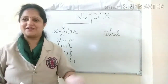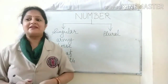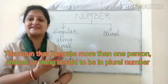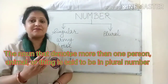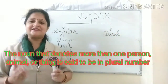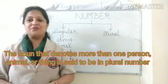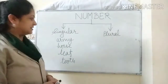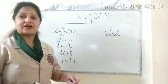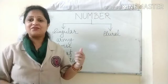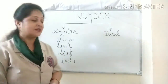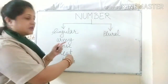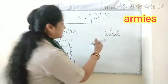So what is Plural Number? The noun that denotes more than one person, animal, or thing is said to be in Plural Number. Now I am giving you the examples of plural nouns. So here: Army — the plural of army is armies.